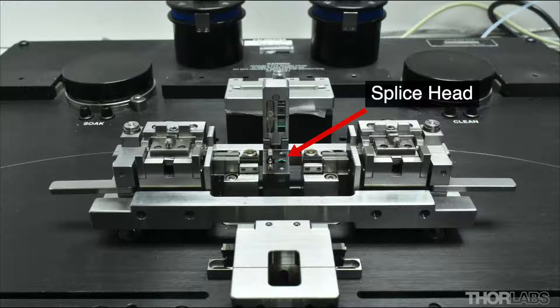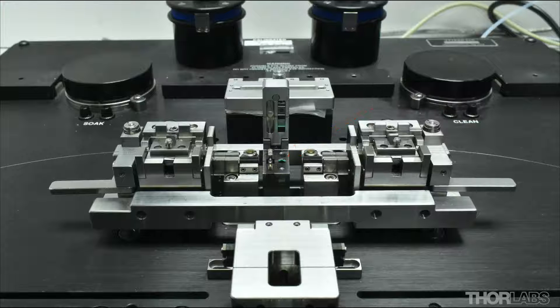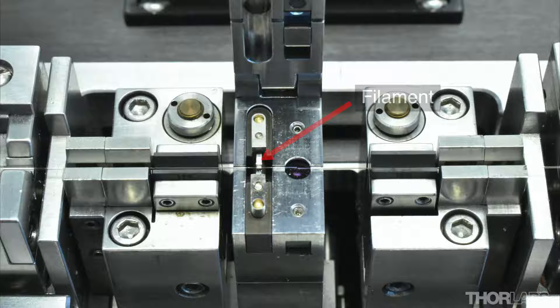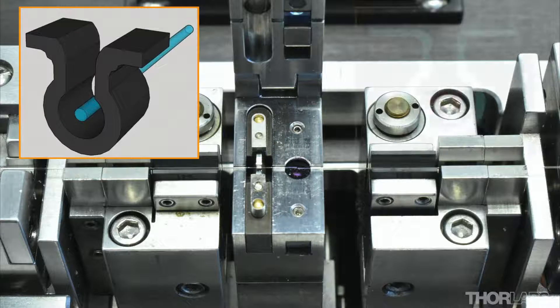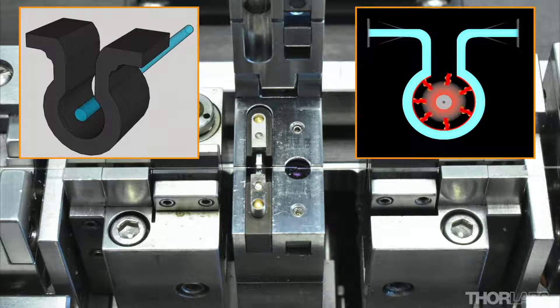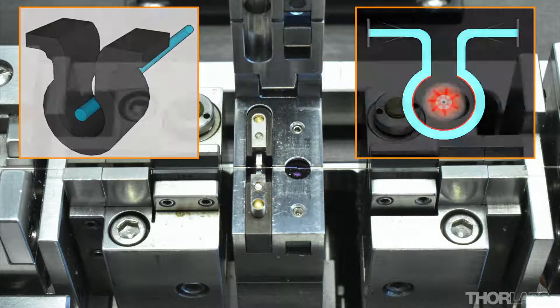Splicing is performed at the splice station. Heat is applied to the fibers through the resistive heating of an omega-shaped filament. This means that a controlled amount of heat can be supplied uniformly and consistently to fibers.